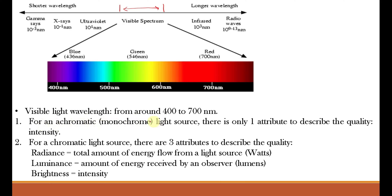For an achromatic or monochromatic light source, there is only one attribute to describe quality: intensity — and therefore it is known as grayscale. Grayscale represents different scales of gray from white at one end to black at the other. Monochromatic means single color, that single color being white; the absence of white is black. Therefore it is known as monochromatic or achromatic — one which is not having color.